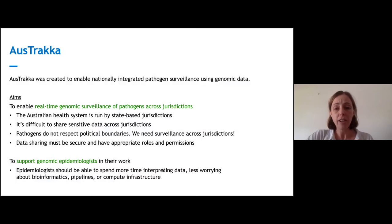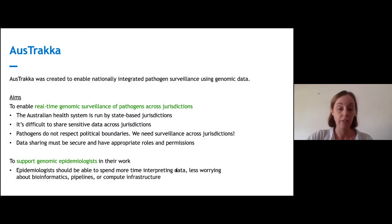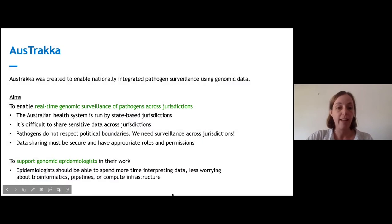It's difficult to share data outside the state, which means that if a pathogen crosses state boundaries — which of course they do — you need some way to compare pathogen occurrences in different states and find out what's going on. We have to be able to share data between states, and that's what OzTracker is about. OzTracker is there to support the work that genomic epidemiologists do for outbreak tracking.